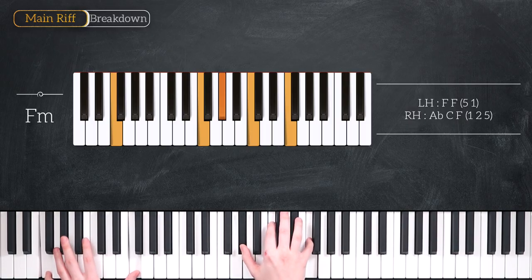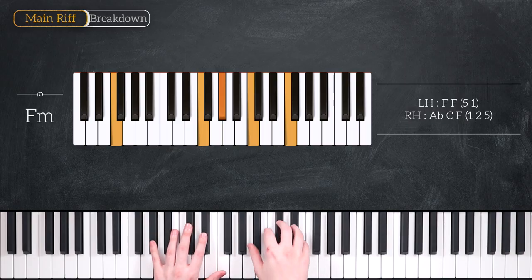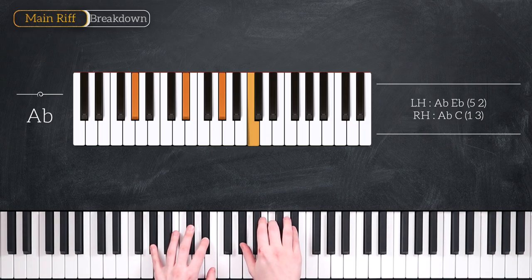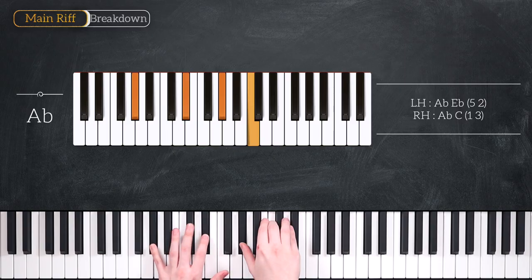Our fourth chord is going to look a little bit different. It's an Ab major chord. A flat and Eb in the left hand, Ab and C in the right hand.